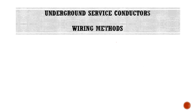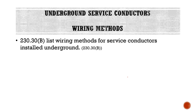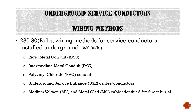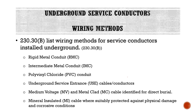Now we're going to look at some specific wiring methods. Section 230.30B lists wiring methods for service conductors installed underground. Where installed underground, the permitted wiring methods are: rigid metal conduit, intermediate metal conduit, PVC, underground service entrance (USE) cables and conductors, medium voltage and metal clad cable identified for direct burial, and mineral insulated cable where suitably protected against physical damage and corrosive conditions. Requirements for mineral insulated cable will be based on the environment they're installed in, as some areas are subject to more damage than others.